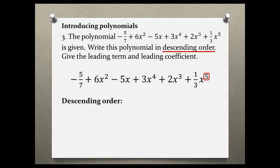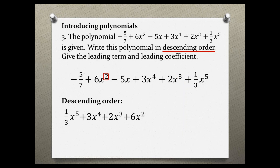So let's put this polynomial in descending order. We are finding the highest power — in this case it is 5 — and we write this term first: 1 third x to the fifth power is the leading term with the highest power. Then going down with our exponents, the next term has degree 4: 3x to the fourth power. Then degree 3: 2x to the third power. And then 6x squared.